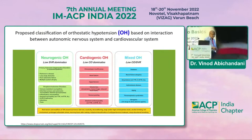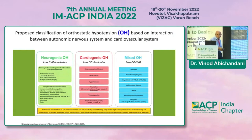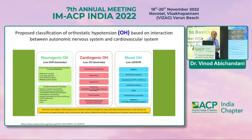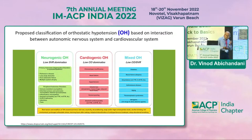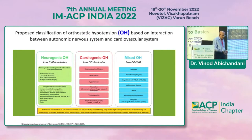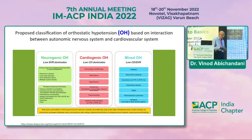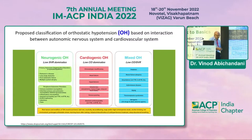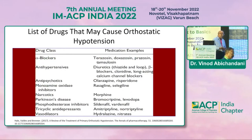The mixed type of OH is typically seen in diabetes, CKD patients on dialysis, amyloidosis, autoimmune diseases, aging, paraneoplastic syndromes, and drug-induced cases. Risk factors and modifiers of OH onset or recurrence include bed rest, inactivity, deconditioning, large or high-carbohydrate meals, alcohol drinking, hot environment, prolonged orthostatic stress, morning hours after waking, initiation or intensification of anti-hypertensive treatment, and sleep-disordered breathing.